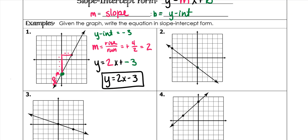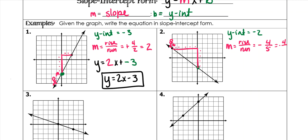Find our y-intercept, because it's the easiest thing to see. In this case it's negative 2. Find our slope. Draw my guy — he is walking downhill, which makes this a negative slope. He runs 5 and drops 4, which means my slope is negative 4 fifths.